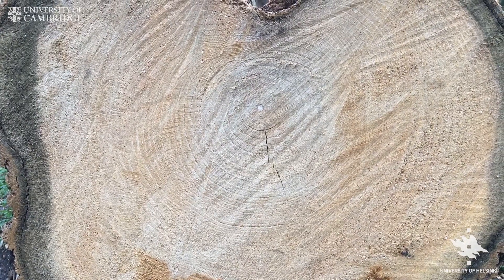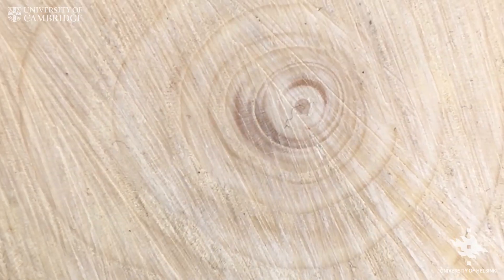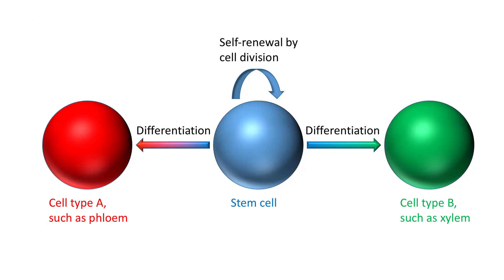We think it's very important to understand how it functions. But surprisingly, very little is known about how it functions. My laboratory identified the stem cells of vascular cambium and how they are regulated. Stem cells are very central in biology in general — in both plants and animals, all growth originates from stem cells. Stem cells can divide and program their daughter cells to differentiate into different cell types, so it's very important to understand this in the vascular cambium.